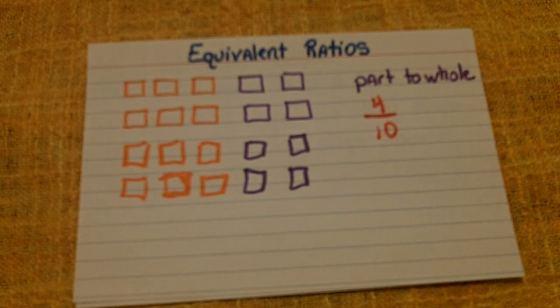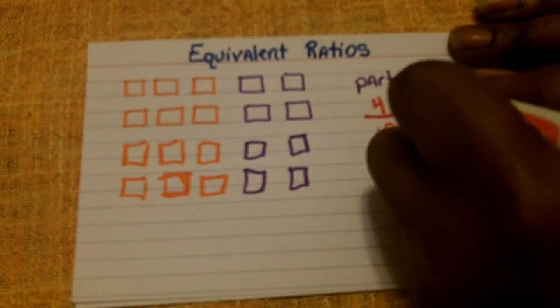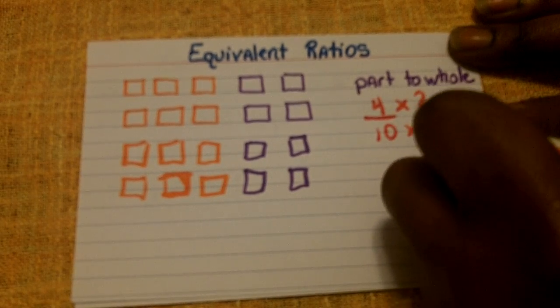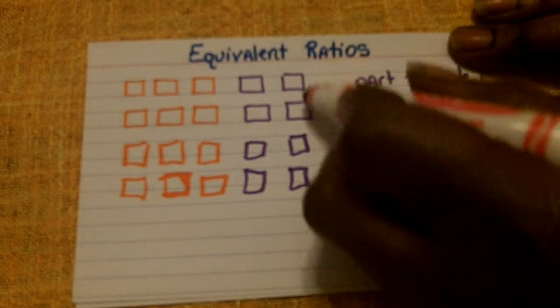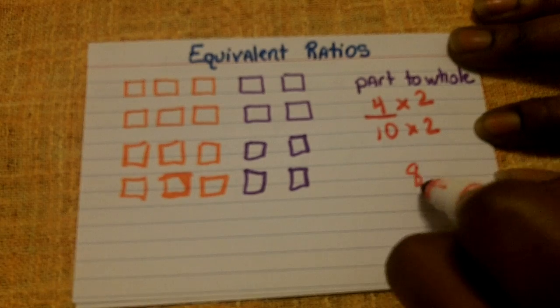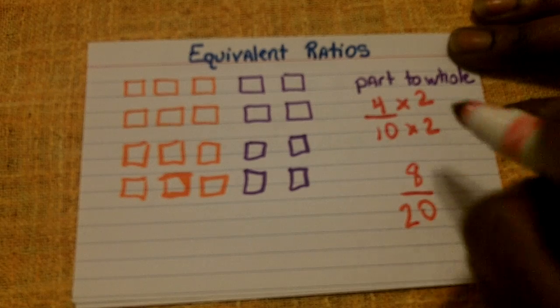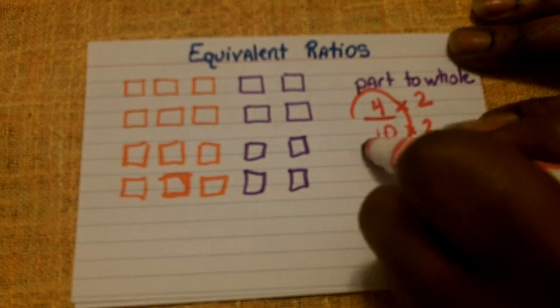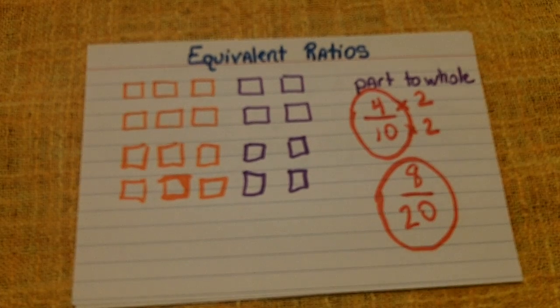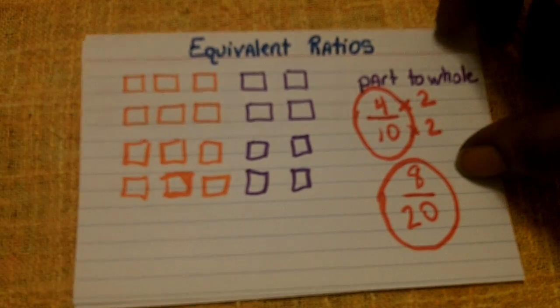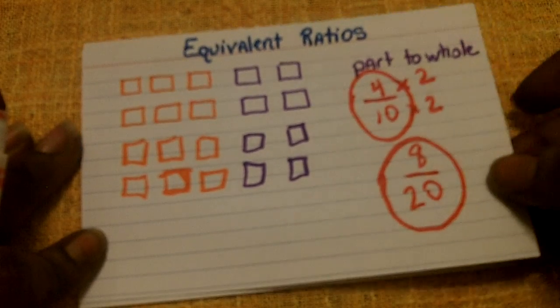So now what we have done is doubled or increased both the numerator and the denominator. So now instead of having four purples, we now have a total of eight. And instead of having ten squares total, we now have twenty. So as you can see, the ratio of four tenths and eight twentieths are what we call equivalent. We're still showing the same relationship between purple squares and the total amount of squares.